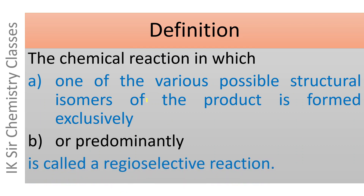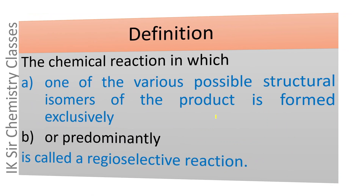Waisi rasayinik prathkriya, jis mein product ke kai sambhav structural isomers, yani constitutional isomers mein se koi ek hi banta ho, ya phir kai structural isomers ban rahe ho to us mein ek isomer dominate kar raha ho, ek major product ke roop mein mil raha ho, to aisi rasayinik prathkriya ko regioselective reaction kehte hain.